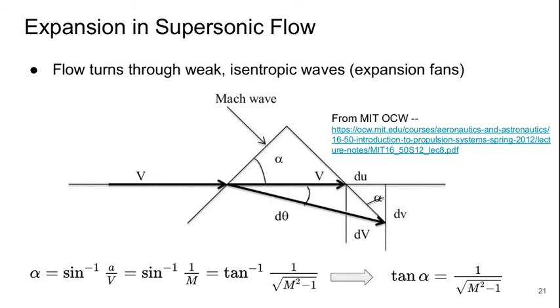So let's think about how we expand a supersonic flow. Expand means accelerating. So how we do this is the flow has to turn through weak isentropic waves, which when there's a bunch of these together, we call it an expansion fan. So if we've got flow coming in at velocity V, and let's say that this is following the contour shape of a wall, which is the reason why it would turn,